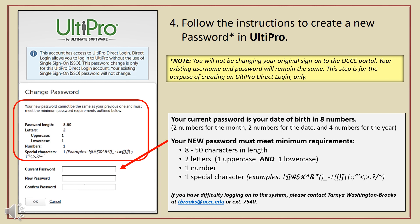Your current password is your date of birth in eight numbers: enter two numbers for the month, two numbers for the date, and four numbers for the year. Now create a new password and enter it into the field, then re-enter the same password to confirm.